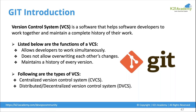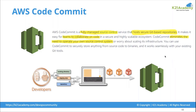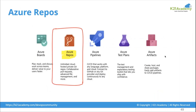A famous version control system in the world is Git. The equivalent available in AWS is AWS CodeCommit, which you use to store your repository and it automatically version controls it. In Azure, we use Azure Repositories. The underlying concept of a version control system is always the same.